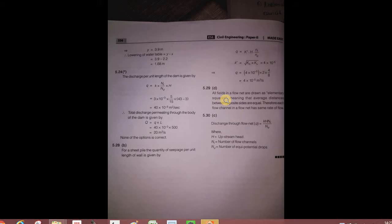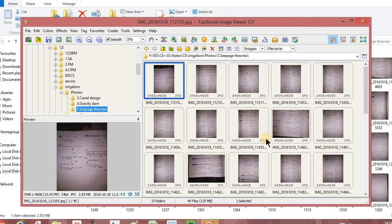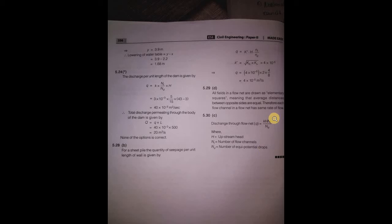This is given by kh times nf by nd, where nf is the number of flow channels and nd is the number of drops, equal to hl drops.